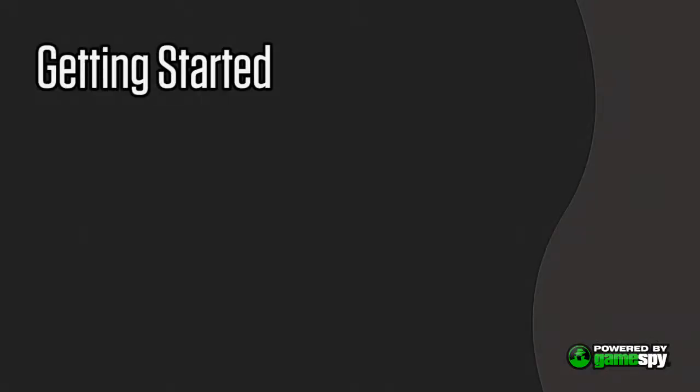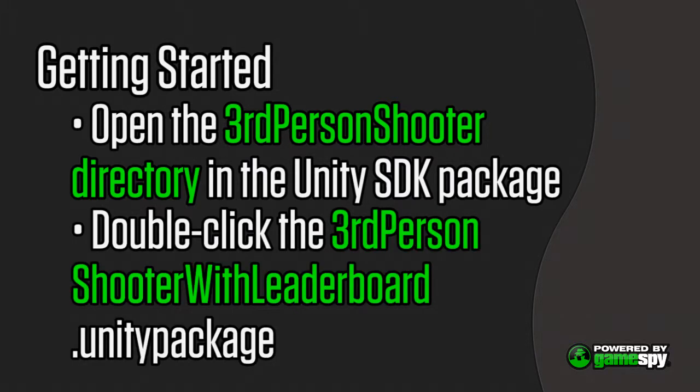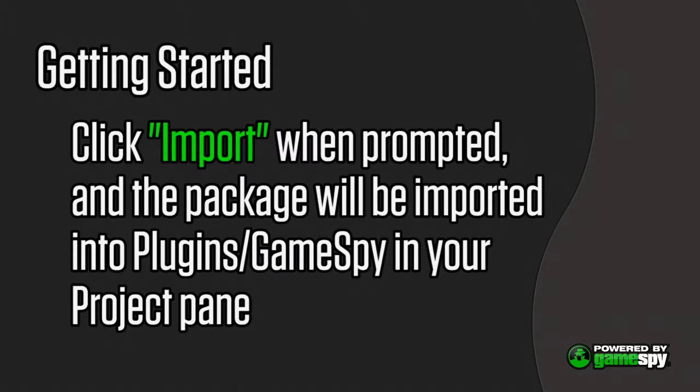While you're at Unity's website, go to unity3d.com/support/resources/example-projects/third-person-shooter and download the sample game. Next, you'll need to add the GameSpy Unity SDK to your Unity package. To do so, open the third-person shooter directory in the GameSpy Unity SDK package, double-click on third-person shooter with leaderboard.unity package, and click Import when prompted. The package will be imported to plugins/GameSpy in your project pane.